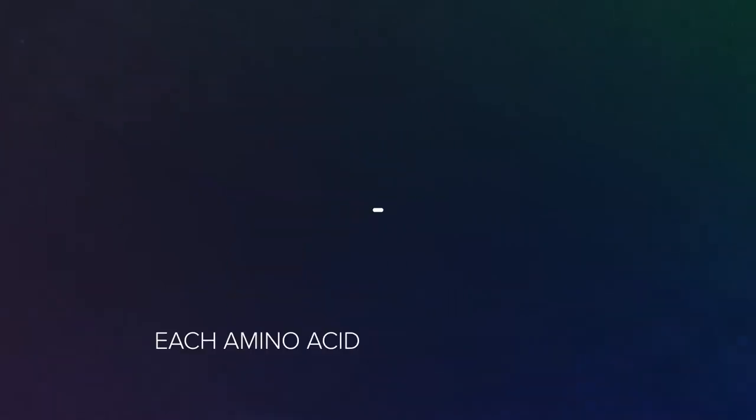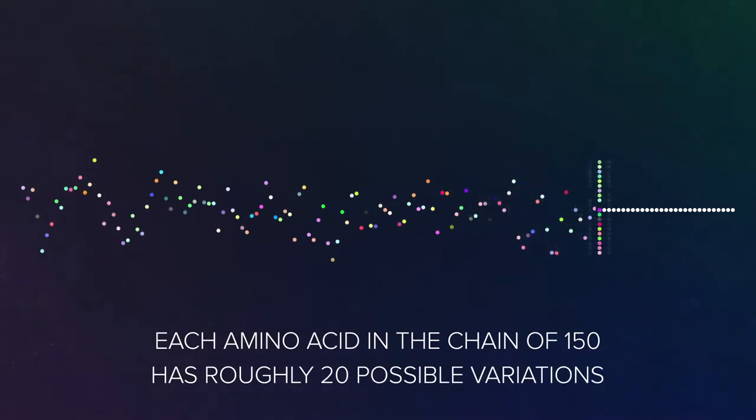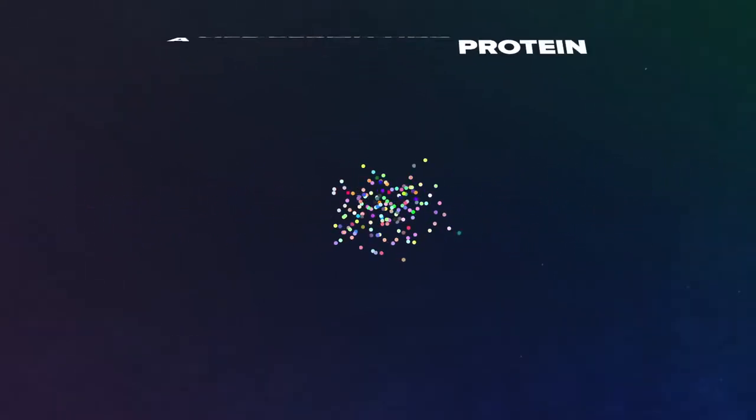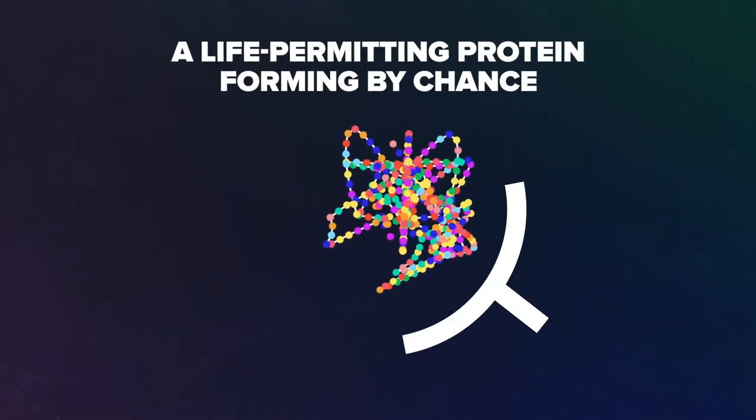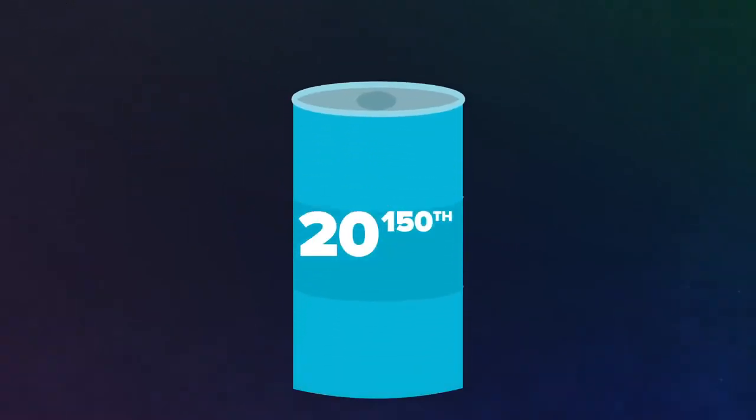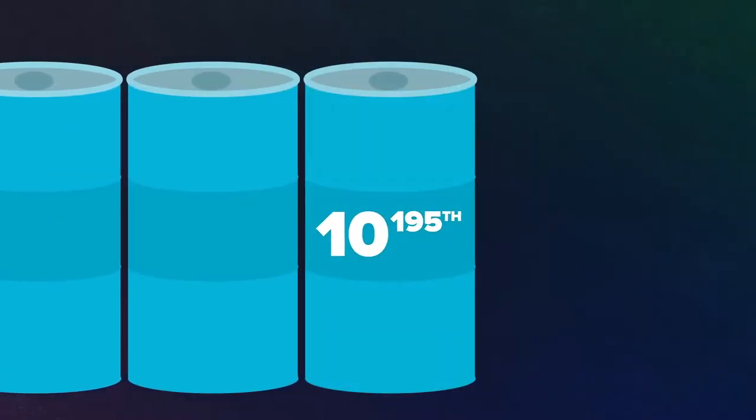So, if each amino acid in the chain of 150 has roughly 20 possible variations, that would mean a life-permitting protein forming by chance would be 20 to the 150th. Now, you reduce that down, pass it around, you get 10 to the 195th on the wall. That's a 1 with 195 zeros after it, just in case you didn't know.